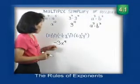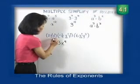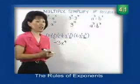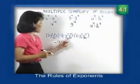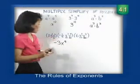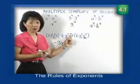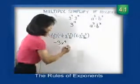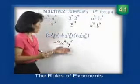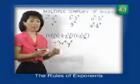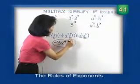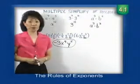Now let's finish off with our y's. We have y to the first, y to the first, and y to the third. Again, when we're multiplying these variables, all we do is add the exponents: 1 plus 1 is 2, plus 3 is 5. So that gives us y to the fifth power. The product of these three monomials is negative 3x to the fourth, y to the fifth.